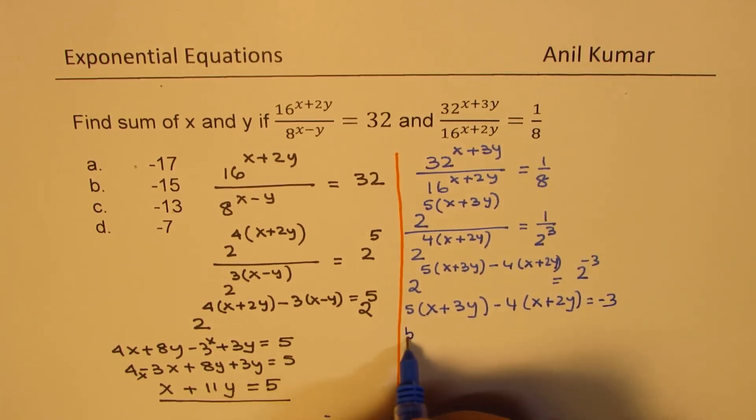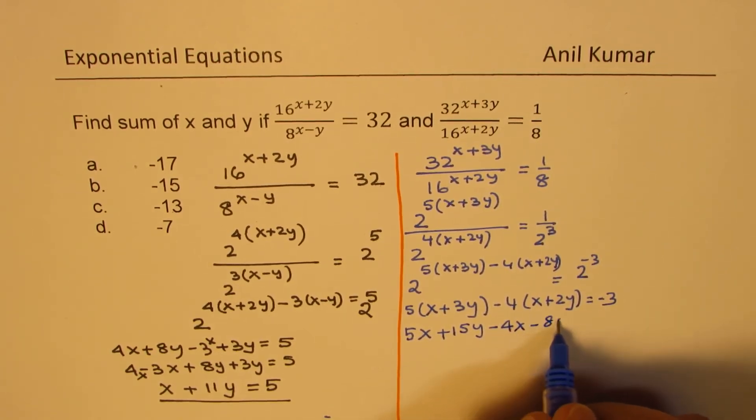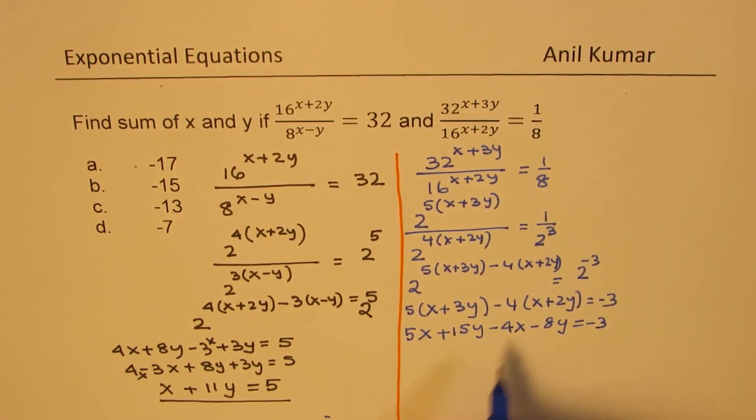Open the bracket, we get 5x plus 15y minus 4x minus 8y equals minus 3. Combine the like terms: 5x minus 4x is x, and 15 minus 8 is 7. So we get x plus 7y equals minus 3.